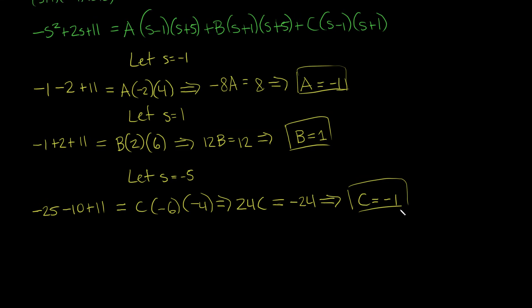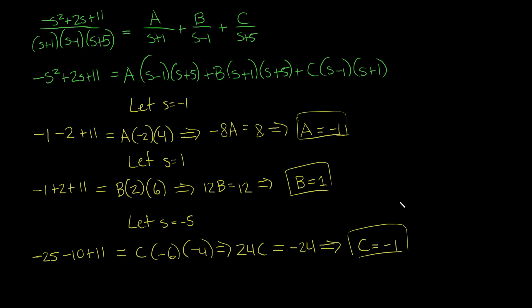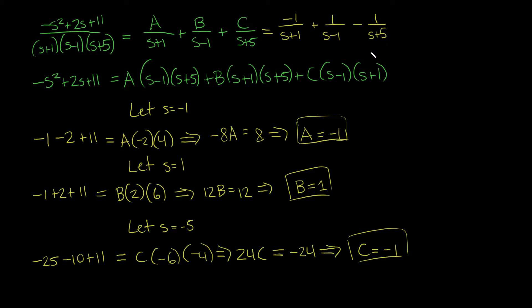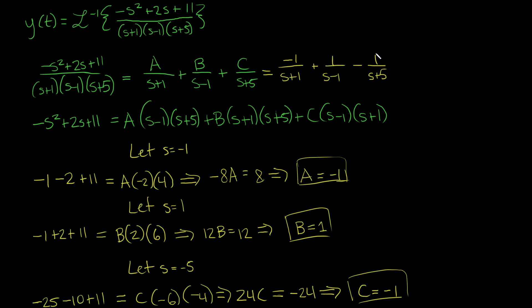What this tells us — coming back to the differential equation — is that after solving the partial fraction decomposition, this fraction is fully equivalent to: negative 1 over (s plus 1), plus 1 over (s minus 1), minus 1 over (s plus 5). So now, knowing our partial fraction decomposition, we can solve our differential equation by finding the inverse Laplace transform.